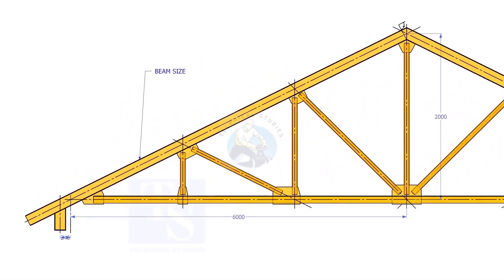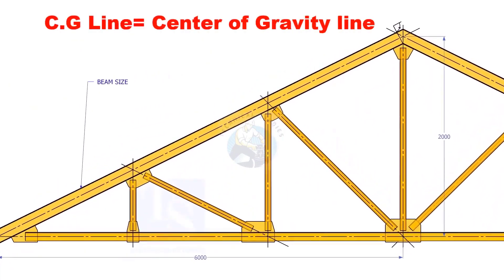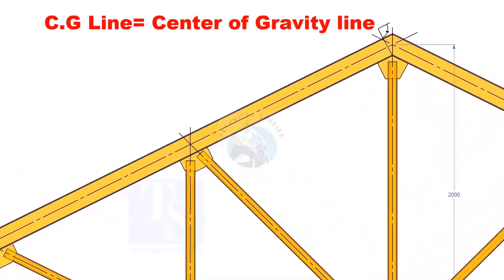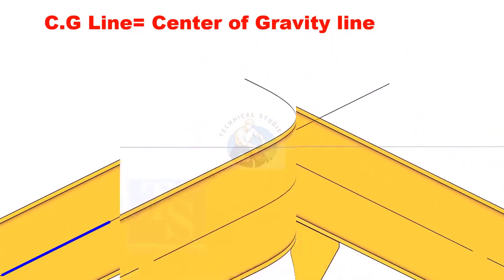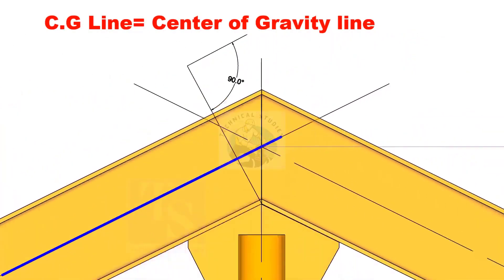In the drawing, usually the span and the height through the CG line of a truss are given. Remember that the CG line doesn't pass through the center of all the objects. It depends on the shape and cross section of an object.